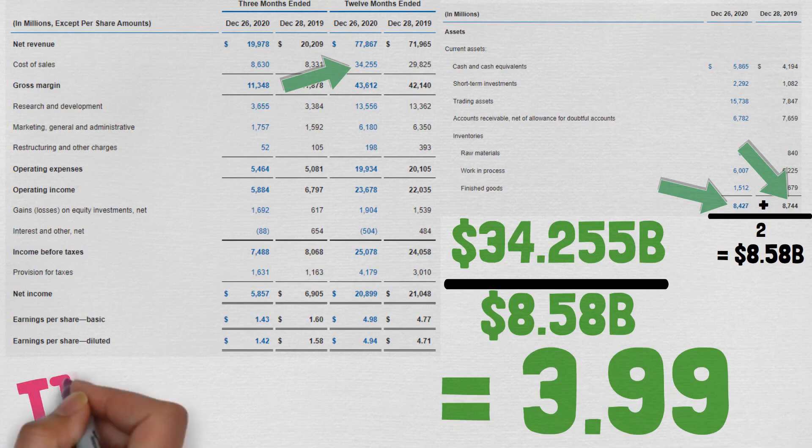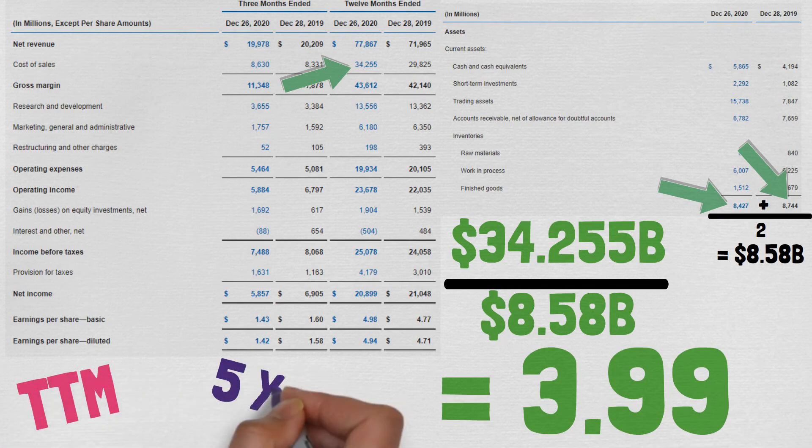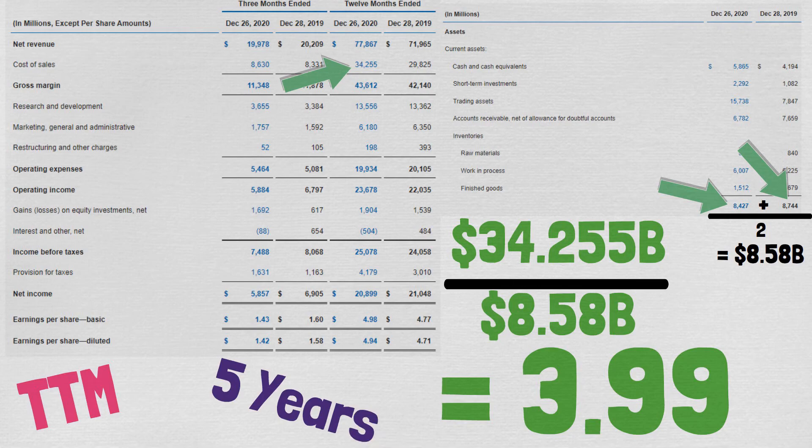You can also calculate the inventory turnover ratio for other periods, for example trailing 12 months or a 5-year average, and so on.